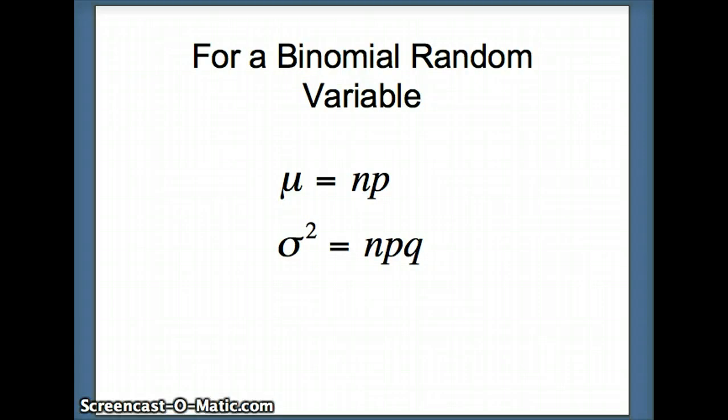So here's our rule. For a binomial random variable, mu is going to be n times p, which is what we would expect. We had n candies, 25% of them were green. We would expect to get 8 times 0.25 or 2 green candies. Sigma squared is npq. That will be our variance.